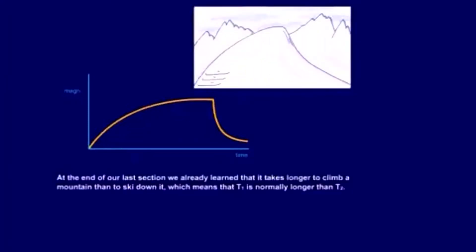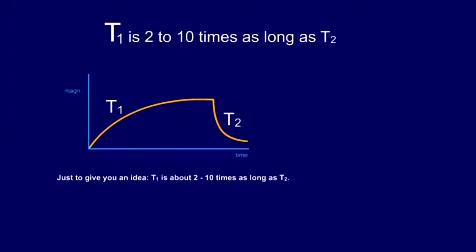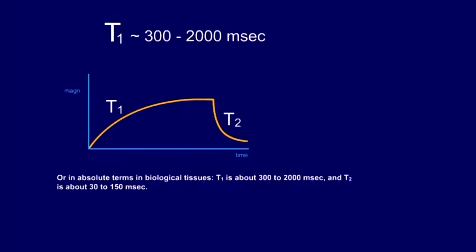At the end of our last section, we already learned that it takes longer to climb a mountain than to ski down it, which means that T1 is normally longer than T2. Just to give you an idea, T1 is about 2 to 10 times as long as T2. Or in absolute terms in biological tissues, T1 is about 300 to 2,000 milliseconds and T2 is about 30 to 150 milliseconds.